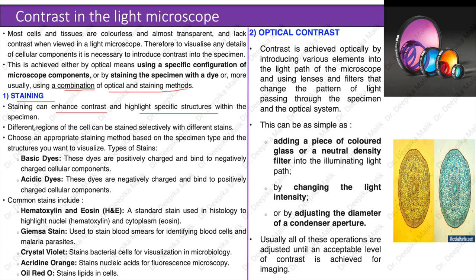Different regions of the cell can be stained selectively with different stains. Types of stains include: basic dyes, which are positively charged and bind to negatively charged cellular components; and acidic dyes, which are negatively charged and bind to positively charged components. Common stains include hematoxylin and eosin — a standard stain in histology highlighting nuclei and cytoplasm — Giemsa stain for blood smears, crystal violet for bacterial cells, acridine orange for nucleic acids in fluorescence microscopy, and oil red O for lipids in cells.